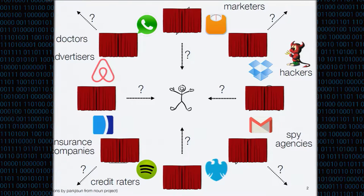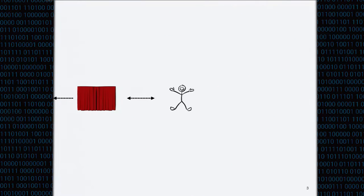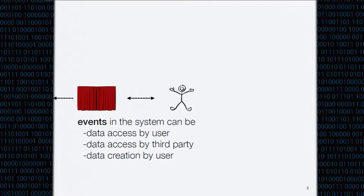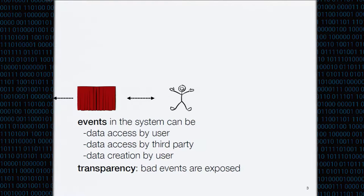The goal of this work is to shed some light onto these interactions and expose what's going on. If we think of Joe's interaction with this system behind a curtain, we can talk about events within this system. An event might be an individual data access - either by Joe or by a third party like an advertiser - or the creation of an event. Transparency is going to say that bad events that take place in the system can be exposed, so we can tell if someone has violated a data sharing policy.